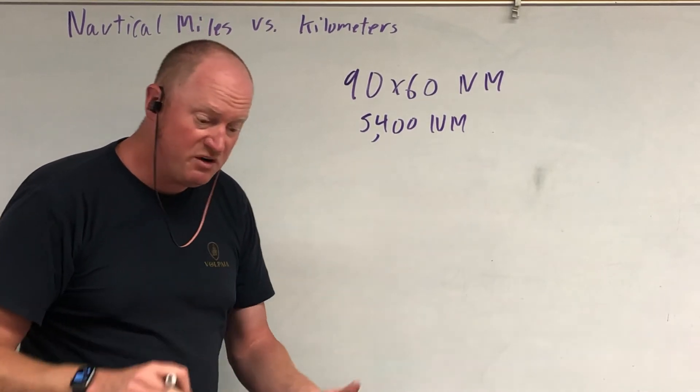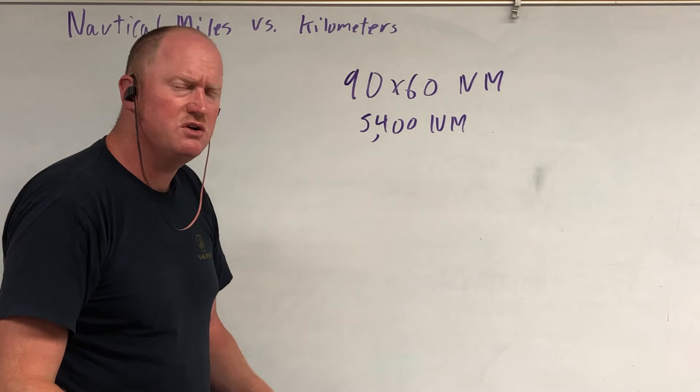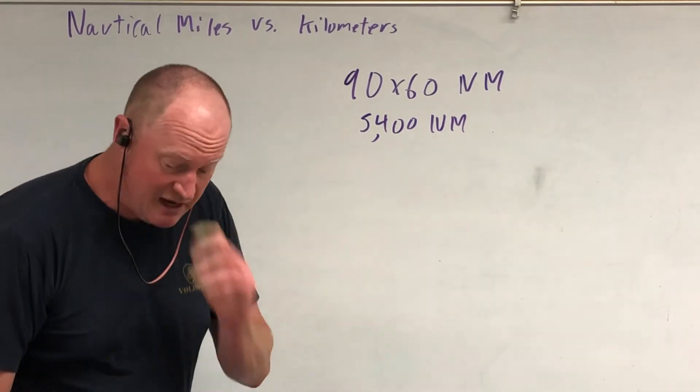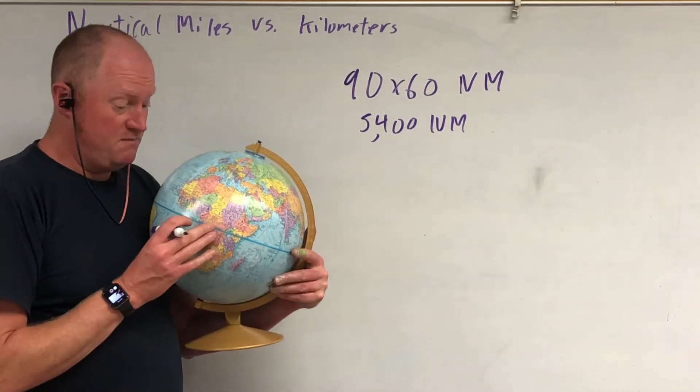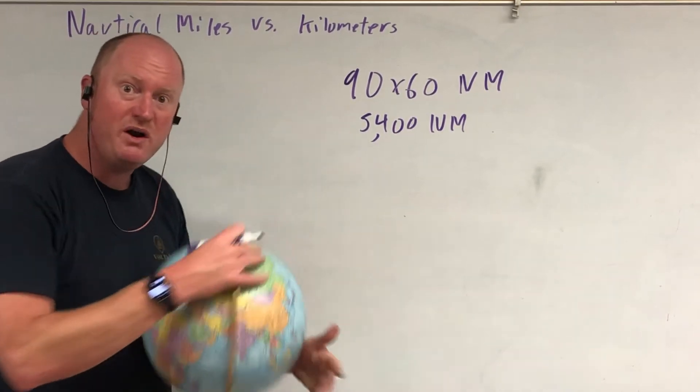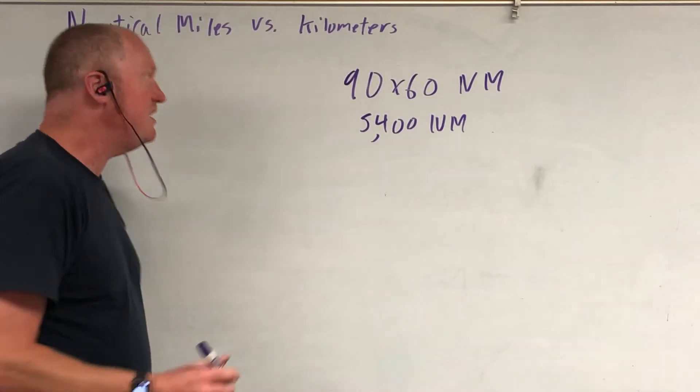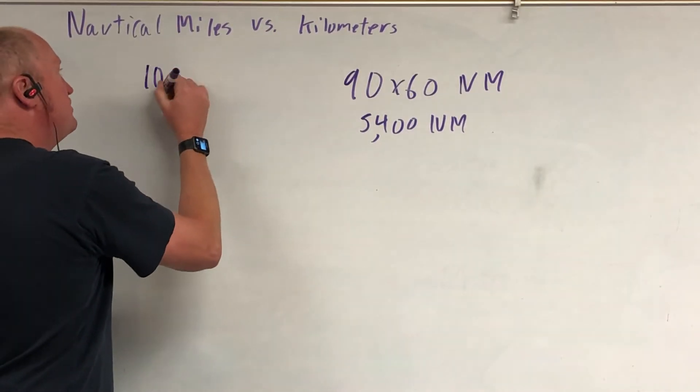Now when Antoine Lavoisier came up with the system of kilometers, he used that same metric from the equator to the North Pole. But he wanted it to be a metric. He didn't want numbers like that. So he wanted it to come out to an even 10,000 kilometers.